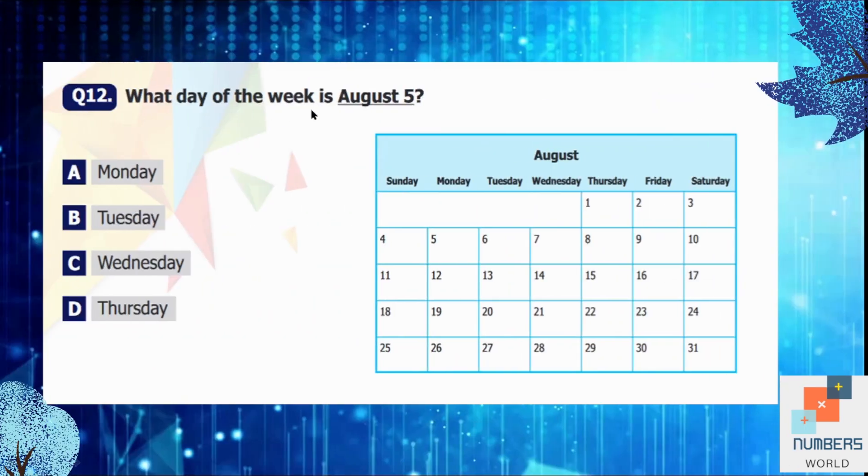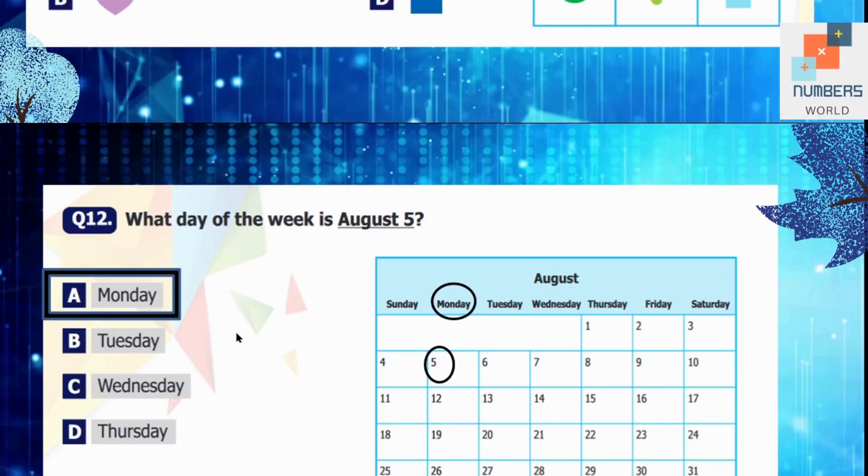Question number 12: What day of the week is August 5? So you can see 1, 2, 3, 4, 5 is here, and now we are going to see what day is written above. It's Monday. So A is our answer. It's Monday.